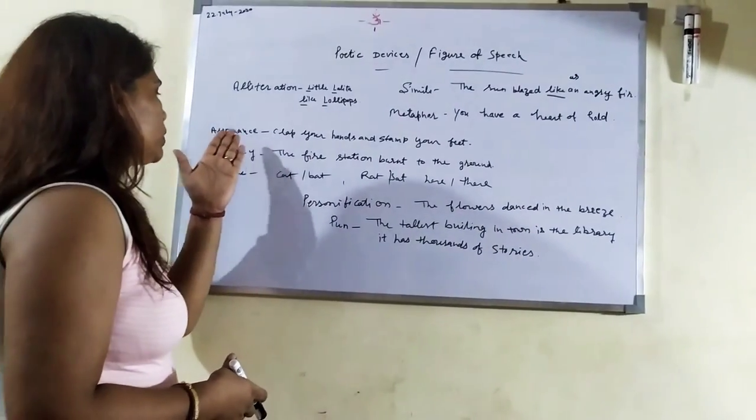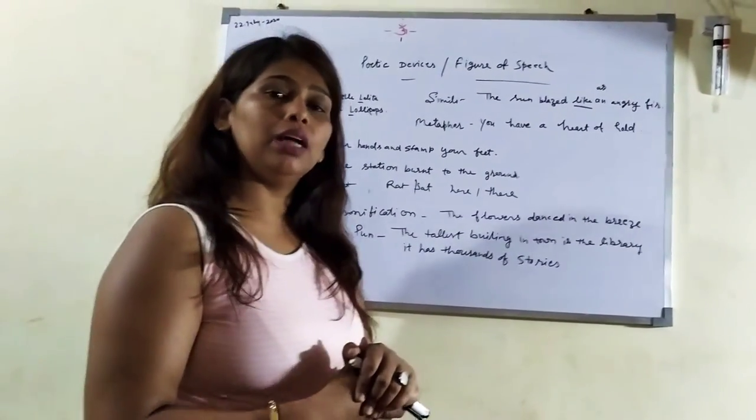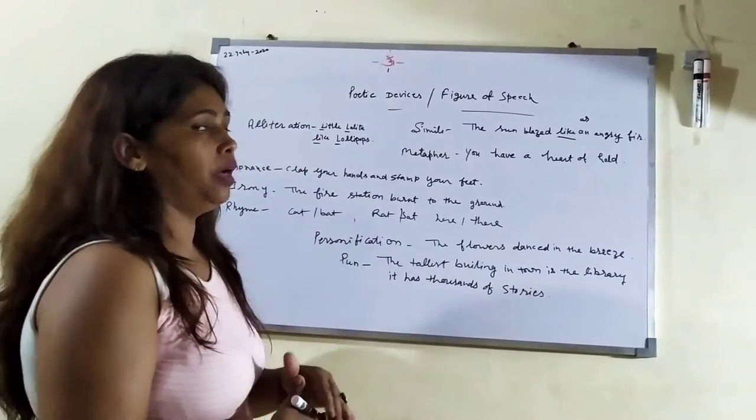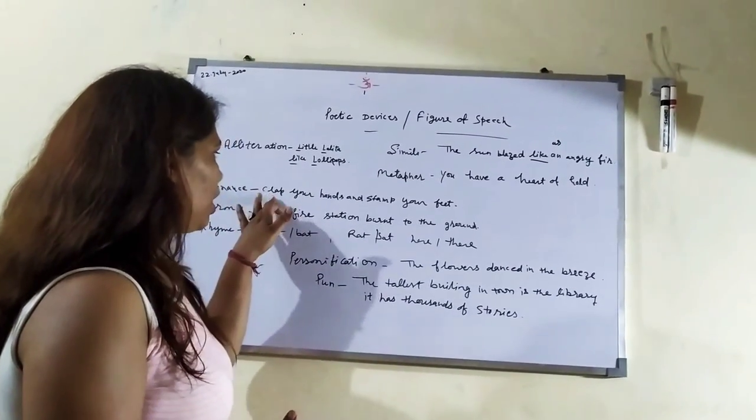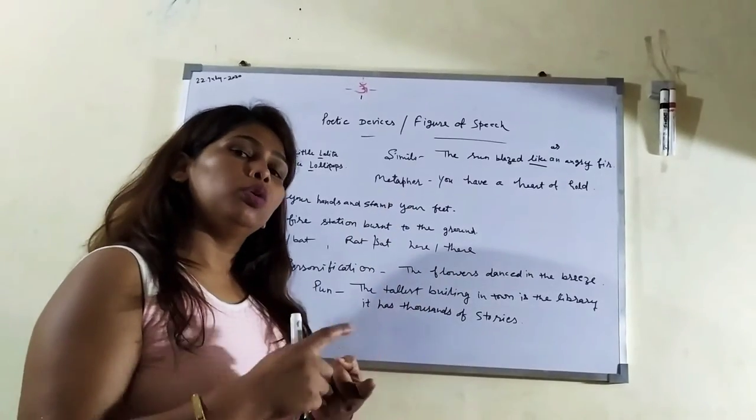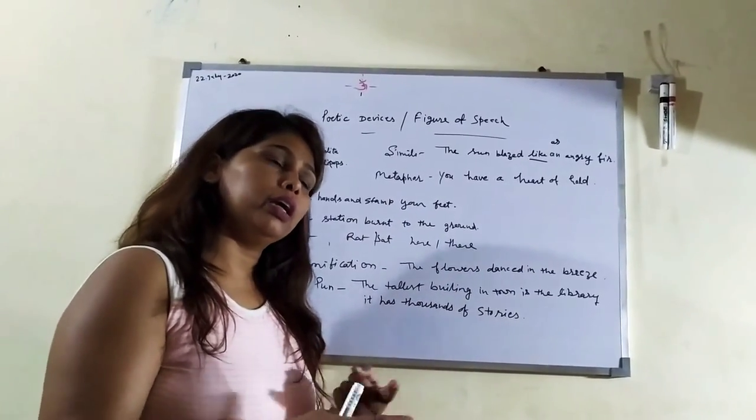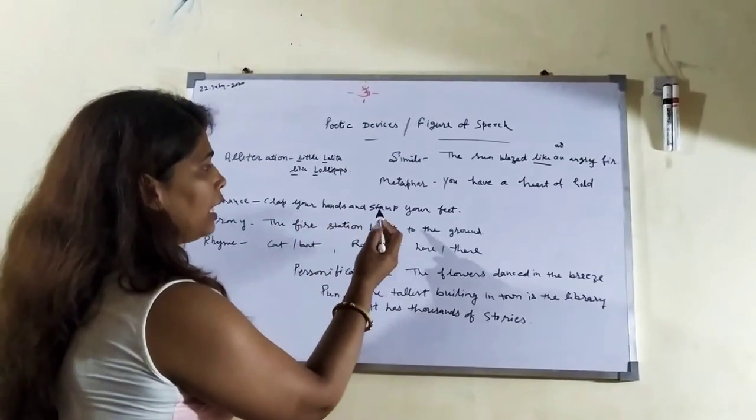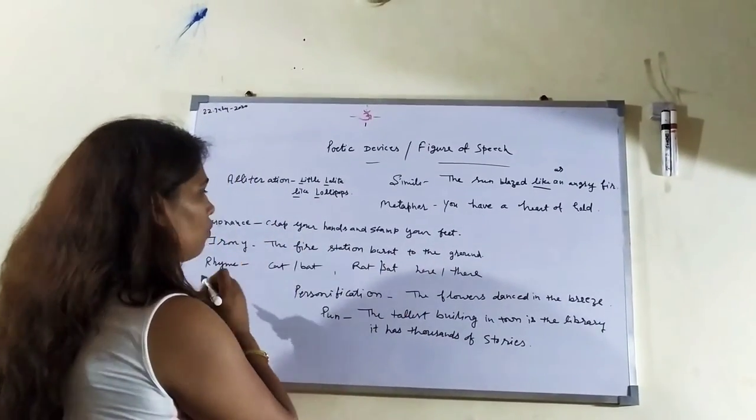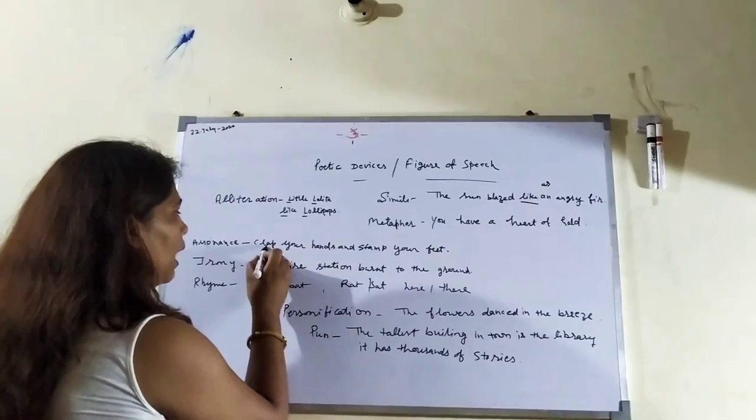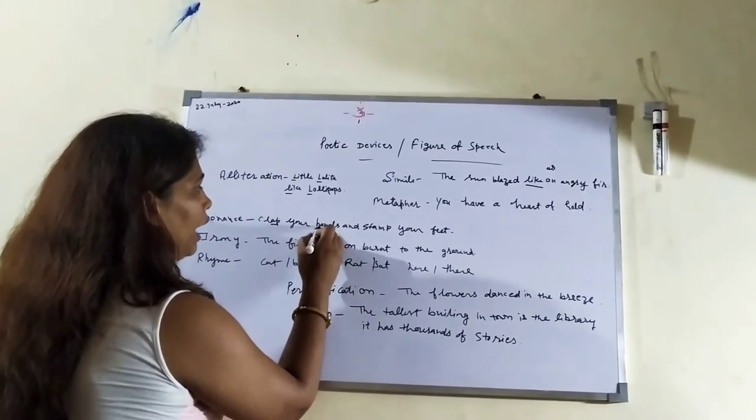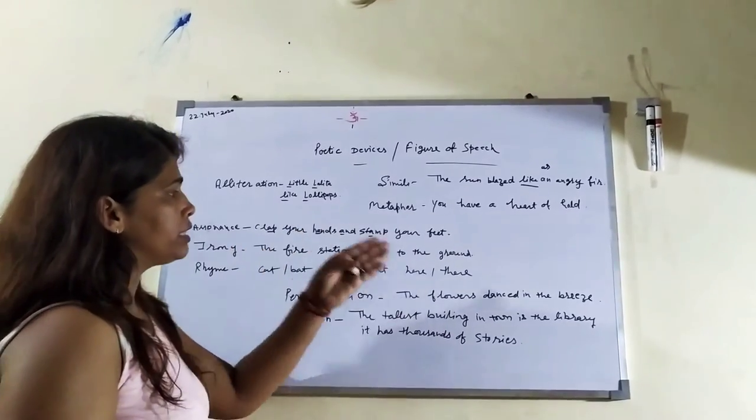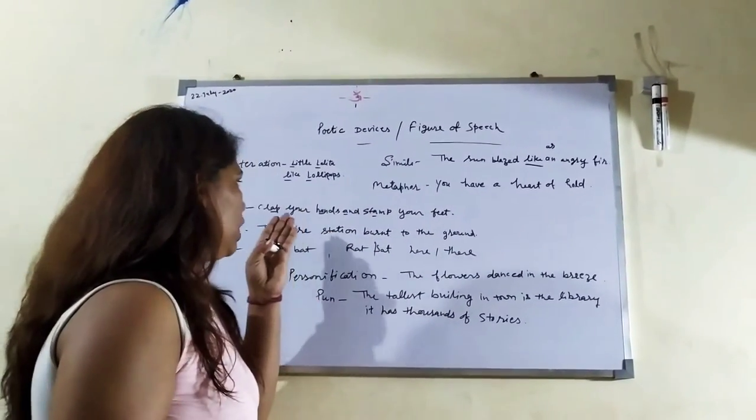And here another one is assonance. Here the alphabet repeat is the alliteration, and here is the same vowel repeat. So where the same vowel is repeated again and again, that is assonance. For example, clap your hands and stamp your feet. Clap, 'a', your hand, again 'a', and stamp, again 'a'. So vowel is repeated many times.